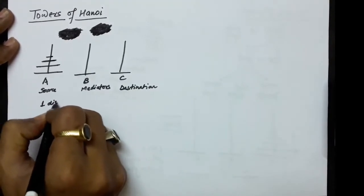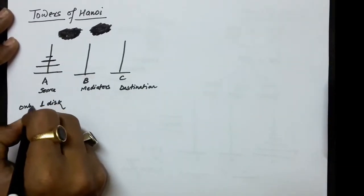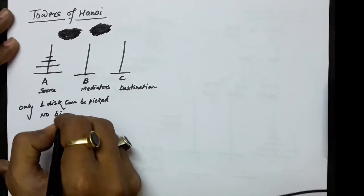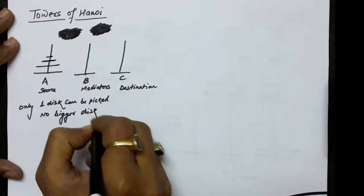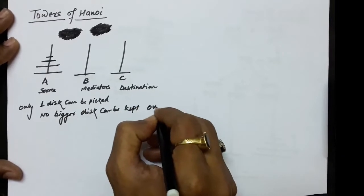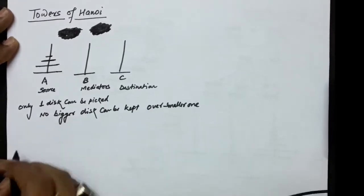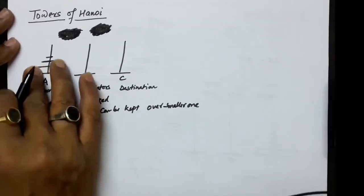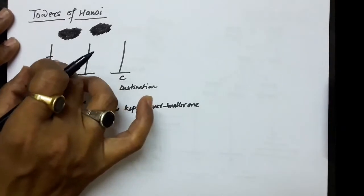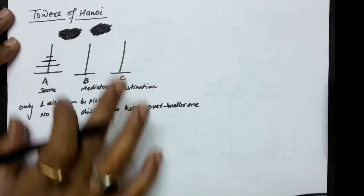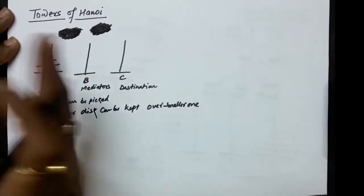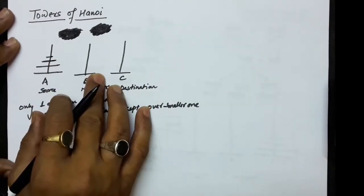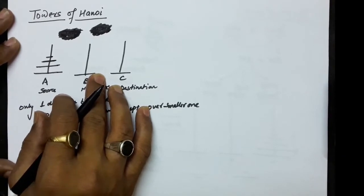At a time, only one disk can be picked. And no bigger disk can be kept over a smaller one — a smaller disk can come over the bigger one, but over the smaller one a bigger one cannot come. So we have to shift the same arrangement to the destination. The mediator tower can be used for keeping a disk temporarily.